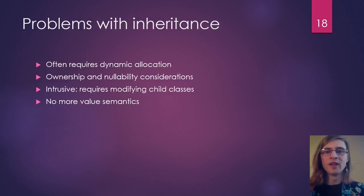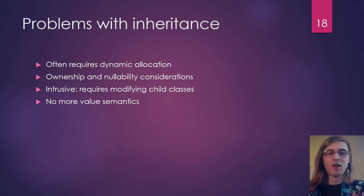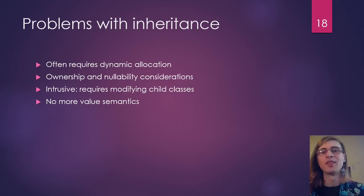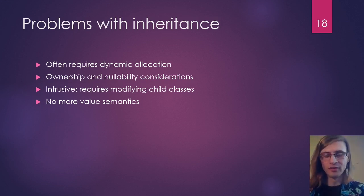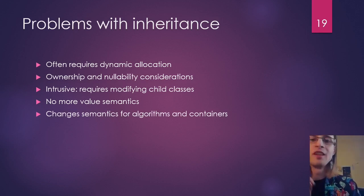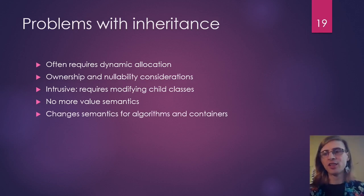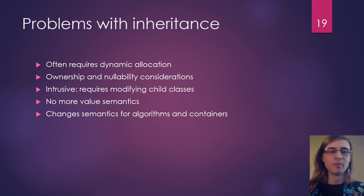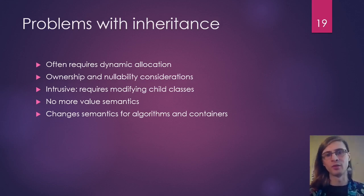Another issue is that now that we have pointers everywhere, we don't have value semantics — we can't copy a base class object without losing the polymorphic parts unless we implement a virtual clone interface on top, which is something you have to build yourself. Also, we have changes in semantics for algorithms and containers. If you want to store a polymorphic object in a std::set, you'd have to provide a custom comparator to make sure you're comparing the underlying objects, not just the pointers. Those are some of the problems with inheritance.